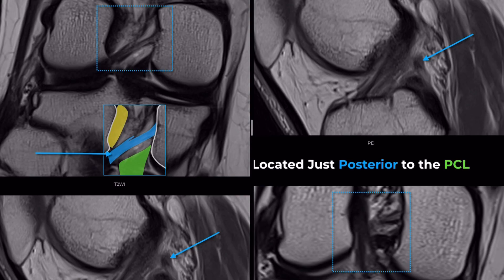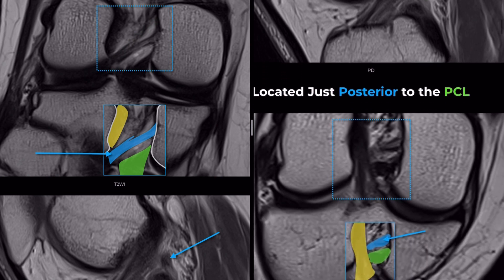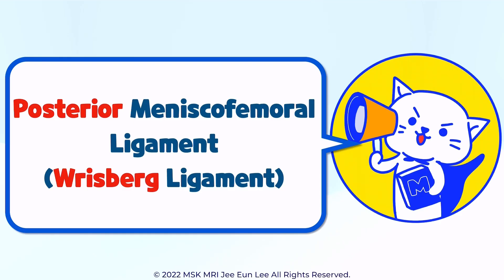For the next case, again, the yellow structure is the ACL, and the green structure is the PCL. What is the blue structure visible here? It shows an oblique orientation on the coronal image, runs to the posterior aspect of the PCL, and is also visible on the oblique coronal image. This is the posterior meniscofemoral ligament, also known as the ligament of Risberg.